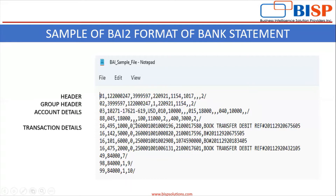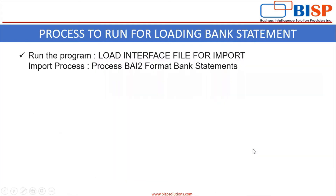Now I will show you how to upload the bank statement electronically in the application. I will load the BAI-2 format of bank statement. For that you have to run the program from Schedule Processes. The program is Load Interface File for Import, and you have to select the process for uploading the BAI-2 format bank statement. This process is called Process BAI-2 Format Bank Statement.